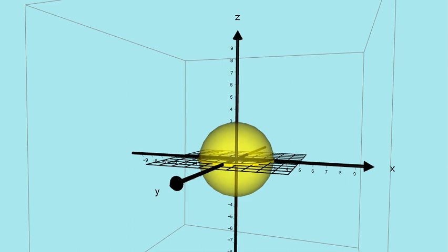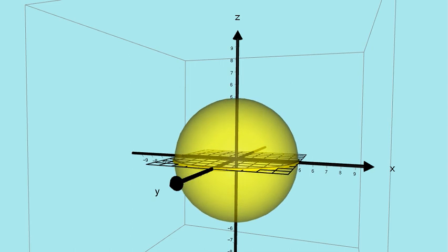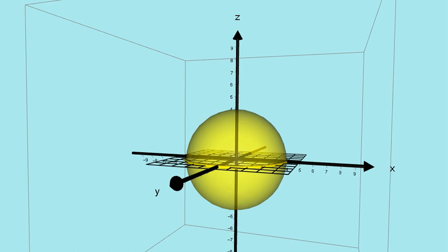The spheres increase in size to a maximum radius of 5 cm. And then they start decreasing, finally disappearing from our 3 dimensions.